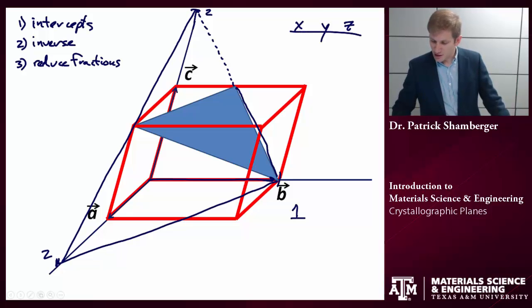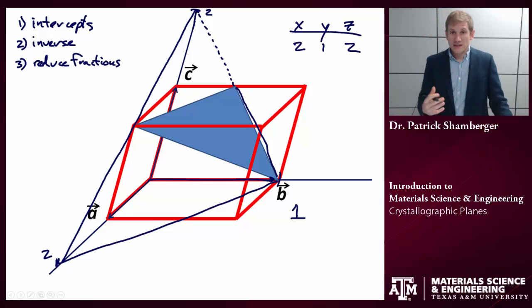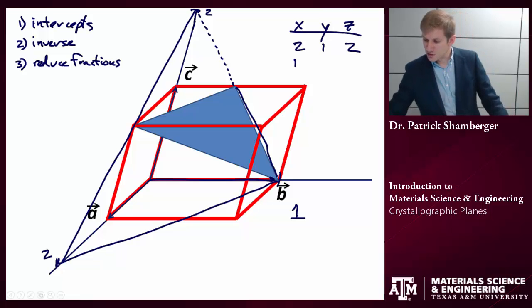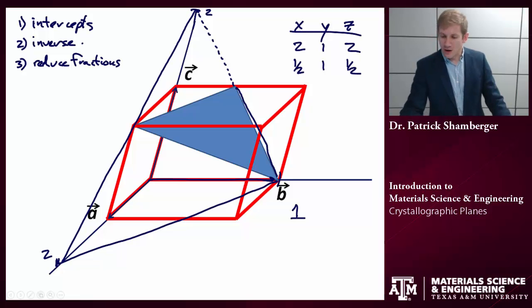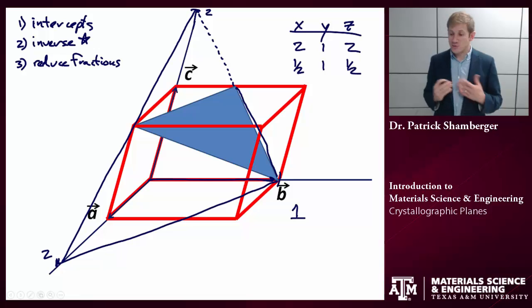So I know the intercepts. I would encourage you at this point to start with a table. The intercepts here are two, one, two. The next step is to take the inverse of those: one half, one, one half. So one over two, one over one, one over two. Now this is kind of tricky, and this is oftentimes what people forget. When we're doing directions, we don't take the inverse at all. When we're doing planes, we do take the inverse. So students oftentimes confuse the two. So just a word of caution.